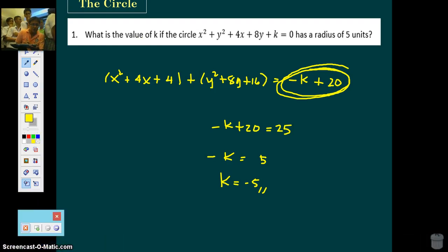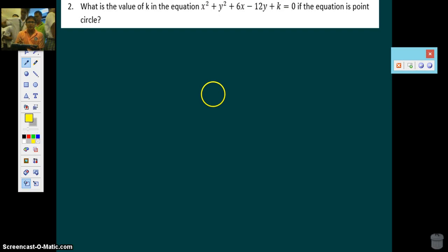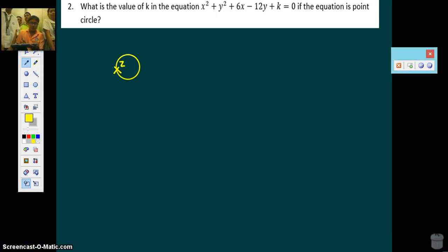Let's go to the next. What is the value of k in the equation x squared plus y squared plus 6x minus 12y plus k equals 0 if the equation is a point circle? So you know a point circle is a circle with zero radius. Basically, it's the same as the previous problem.